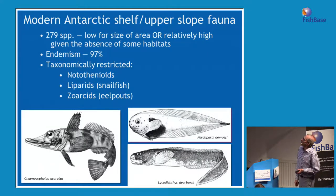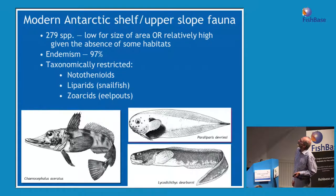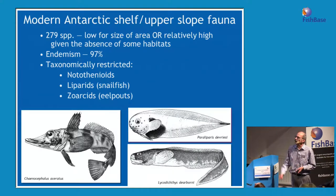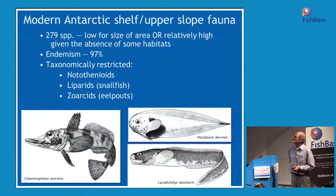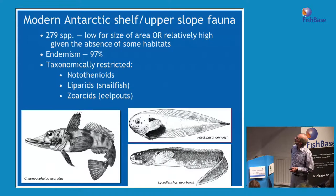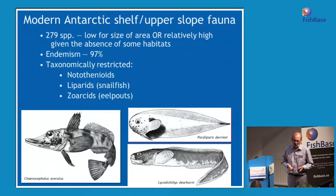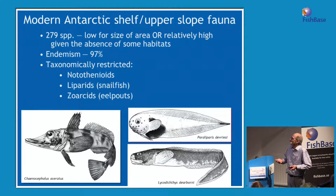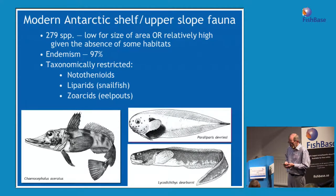The modern shelf and slope fauna is about 279 species. The endemism is extremely high — about 97% for species and about 75% for genera — and it's dominated by three groups: the notothenioids, snailfish, and eel pouts. You could think of it as under-fauned: if the Antarctic Ocean is 10% of the world ocean, it really only has about 1% of the fish fauna. But given the severity of the habitat, it's amazing there are as many as there are.